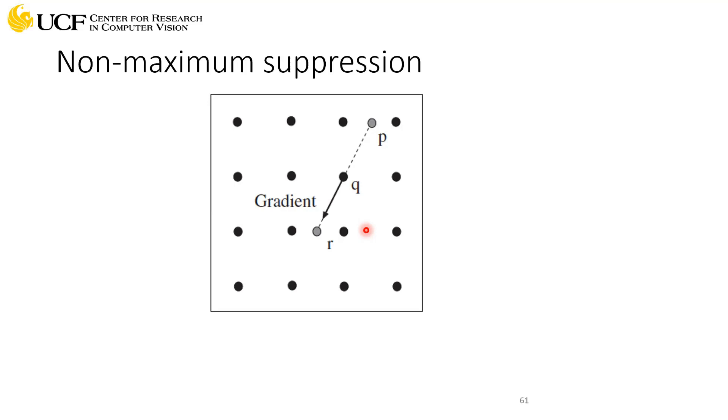Okay, so if the magnitude is greater, then you say that it's an edge. So you're asking if it's a peak or not. If it's a peak, then this value will be higher than all the other values in the neighborhood, right? Then you say it's an edge. If it's not, you say it's not an edge irrespective of whatever magnitude you have.